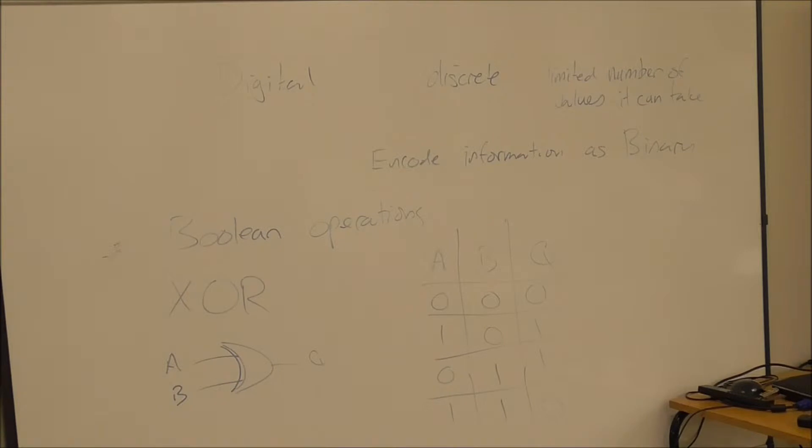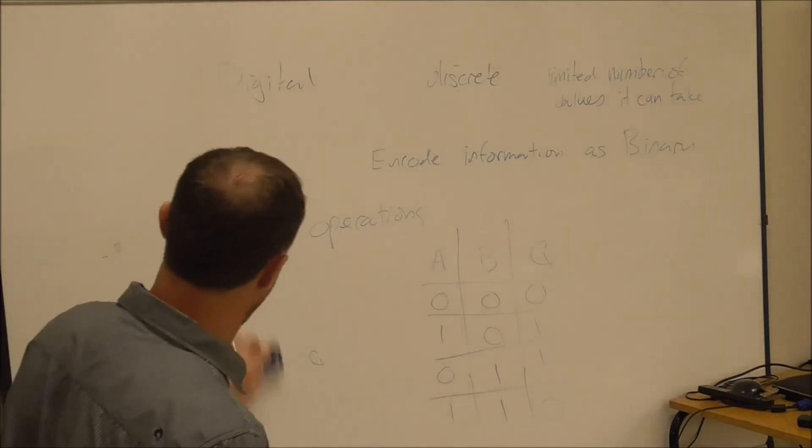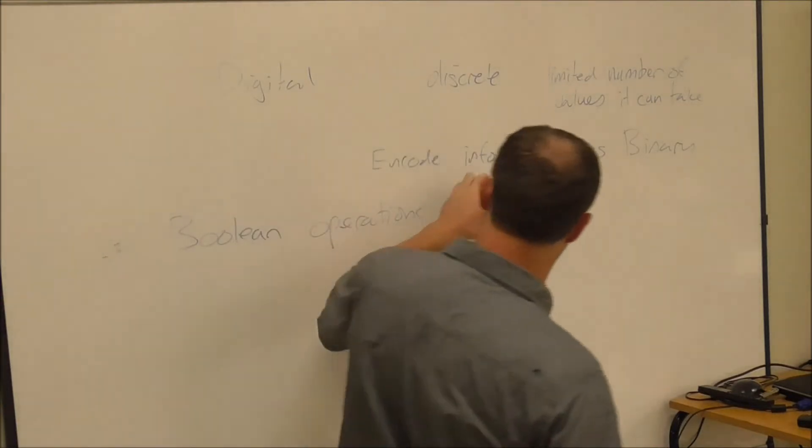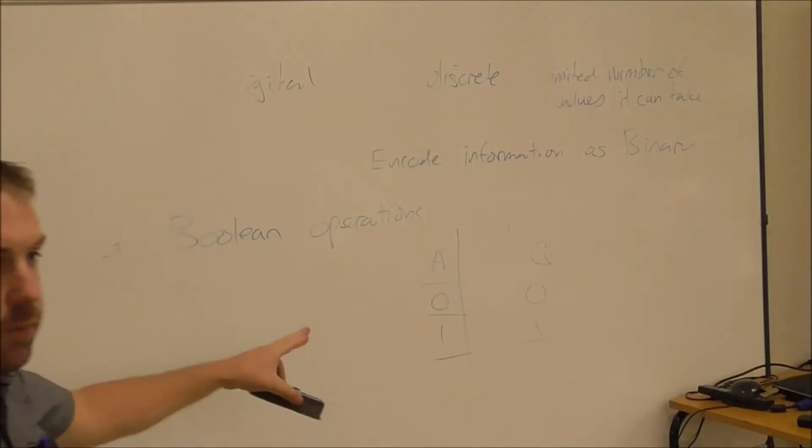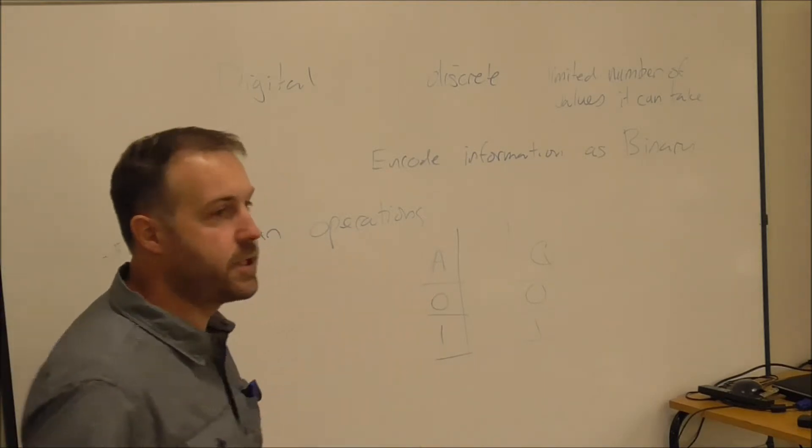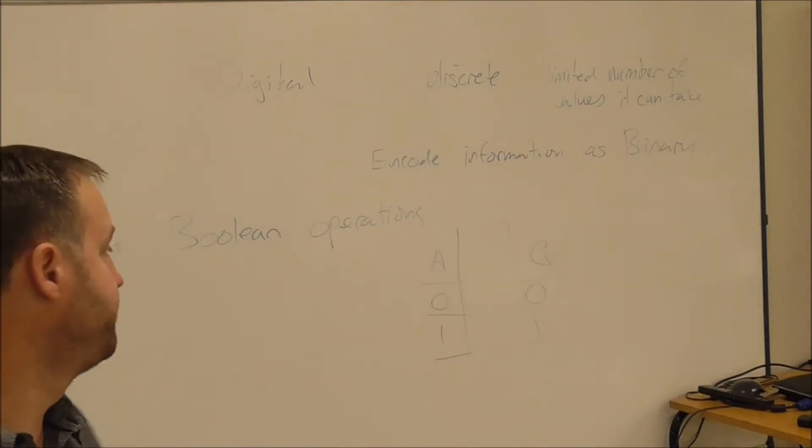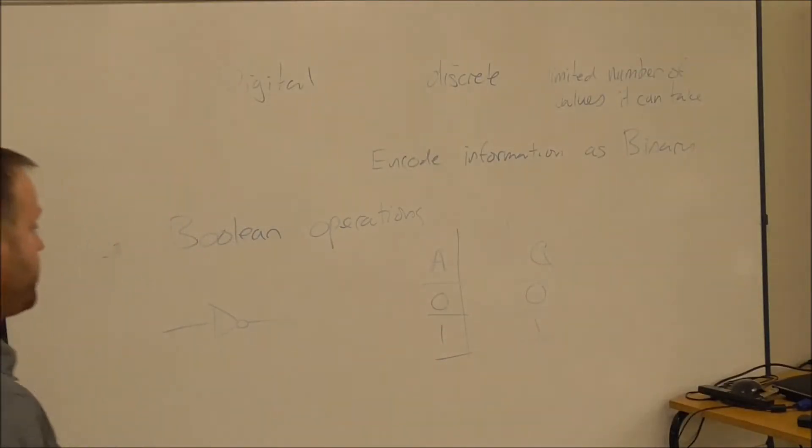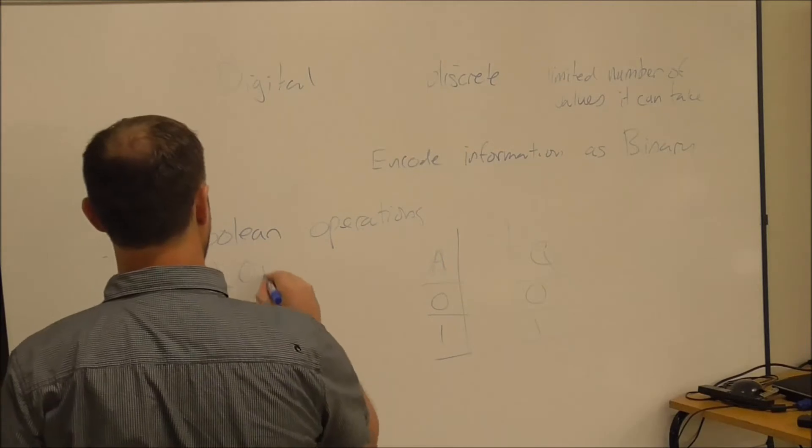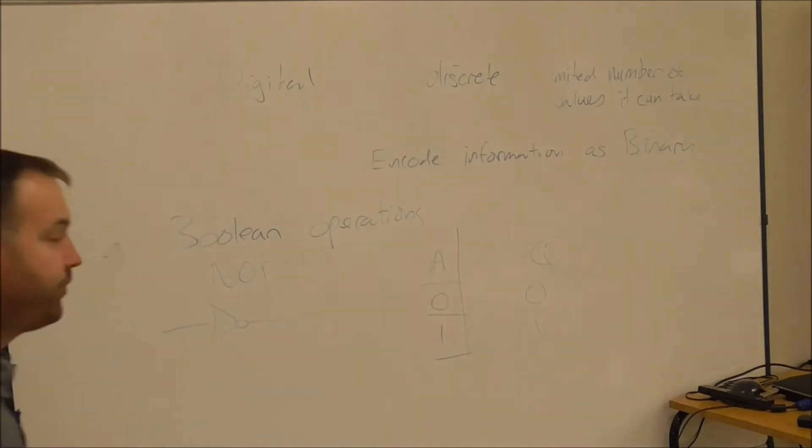So they're the three main ones. And there's a fourth one that follows on to the rest of them. The fourth one is quite different from these two, in that it's only got one input. The others have to have at least two inputs. This one has only got one input. And it's called a NOT gate.